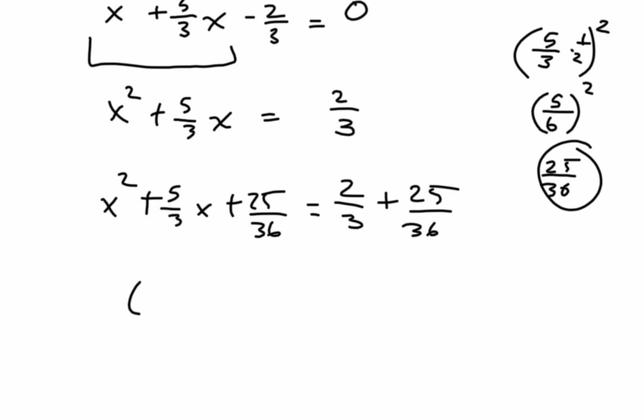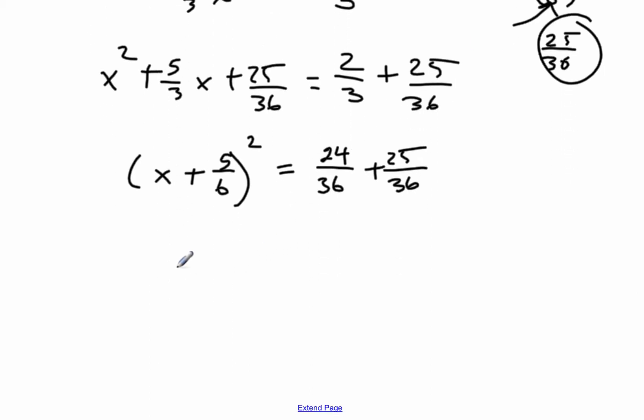Now to factor this, it's always this part right there that goes in there. So it'll be x plus 5 sixths squared. So this factored would be that, is equal to whatever this comes out to be. I think it's 24 over 36, plus 25 over 36.